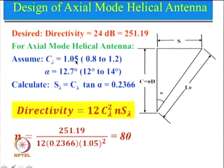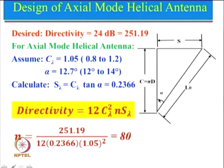For axial mode helical antenna, C_lambda should be taken between 0.8 to 1.2, so it has been taken as 1.05. I normally take this as 1. Alpha was taken as 12.7 degrees, which is between 12 to 14 degrees. I generally take this to be 13 degrees for my design, but this example has been given in the Kraus book so I am continuing with that. Once we have assumed these two parameters we can calculate the value of S_lambda using the expression tan(alpha) = S divided by C.